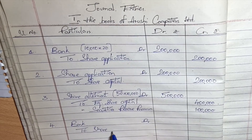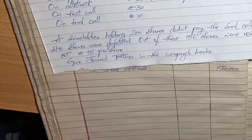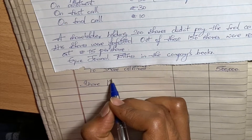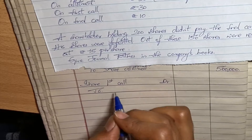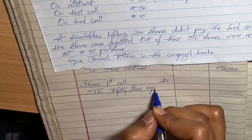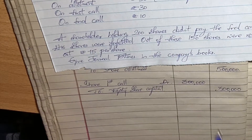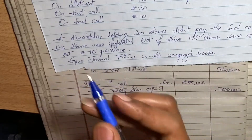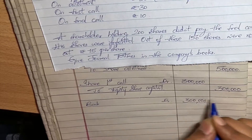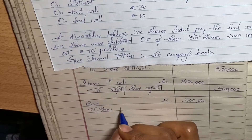For the first call, share first call is debited and equity share capital is credited. That is 30 rupees, so 30 into 10,000 shares is 3 lakhs. That was also paid, so bank is debited for 3 lakhs and share first call account is credited to close it.